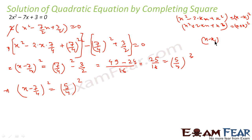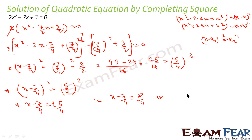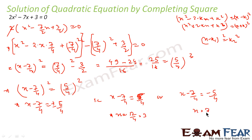This is exactly the form I was looking for: (x - k₁)² = k₂². So x - 7/4 = ±5/4. Taking the positive case: x = 7/4 + 5/4 = 12/4 = 3. Taking the negative case: x = 7/4 - 5/4 = 2/4 = 1/2.